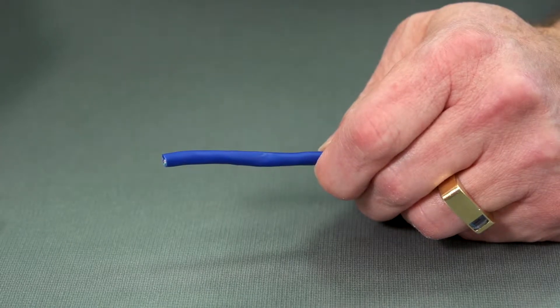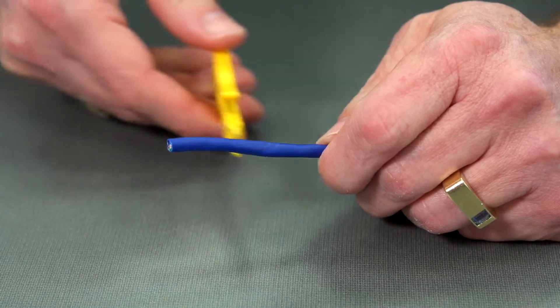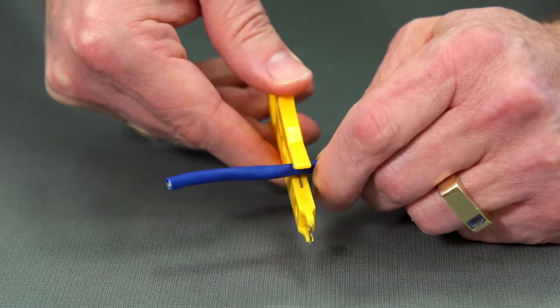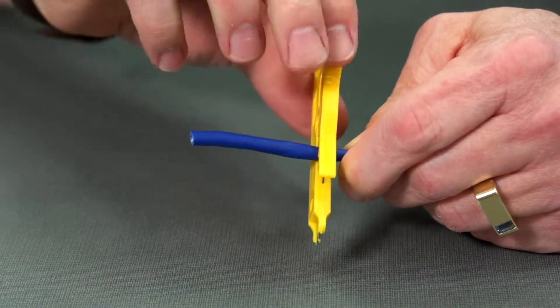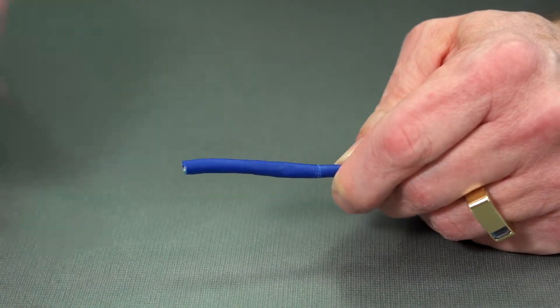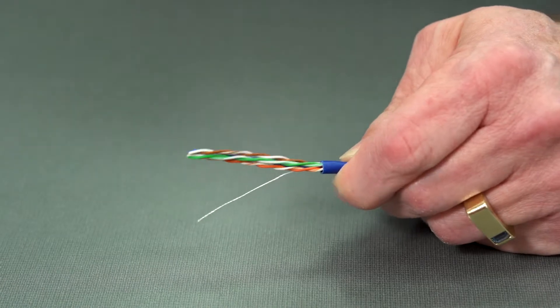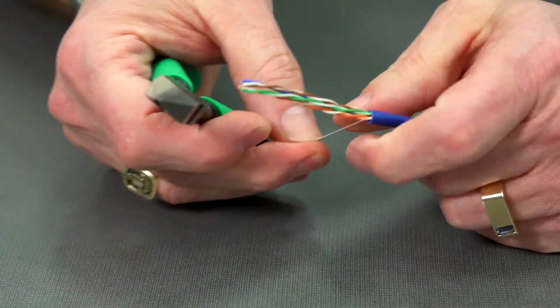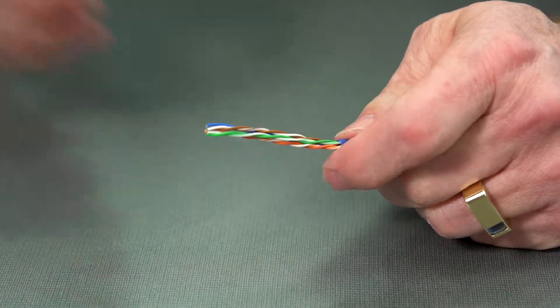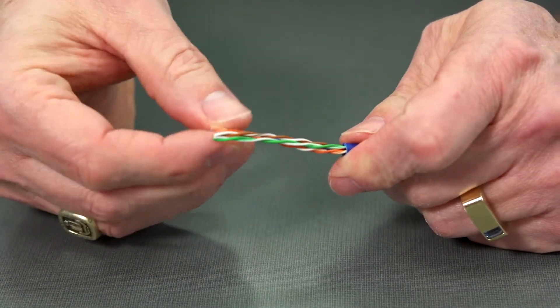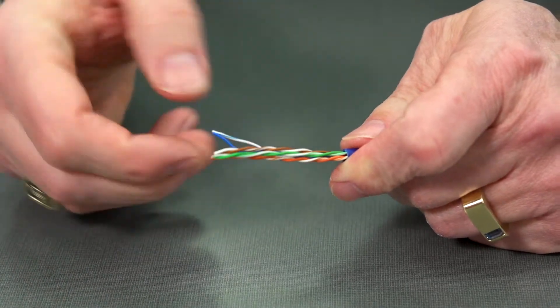First thing we need to do, we'll make our connection, is we need to cut off or trim off our jacket. So we'll put in the tool and use the razor blade. We'll make one pass around, take the tool off, and now we can pull the jacket away.